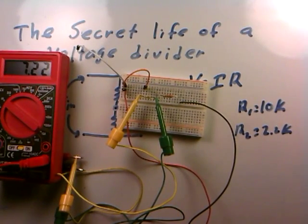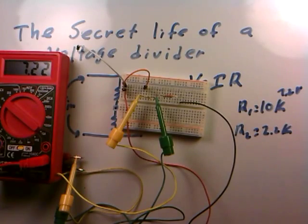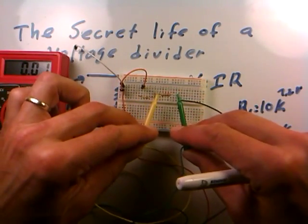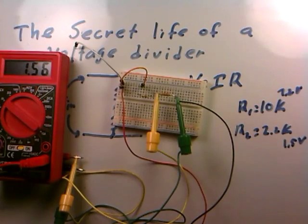I'll jot that down—7.2 volts. Remember it's being driven by a 9 volt battery. The voltage across the 2.2k resistor is coming in at about 1.5 volts.